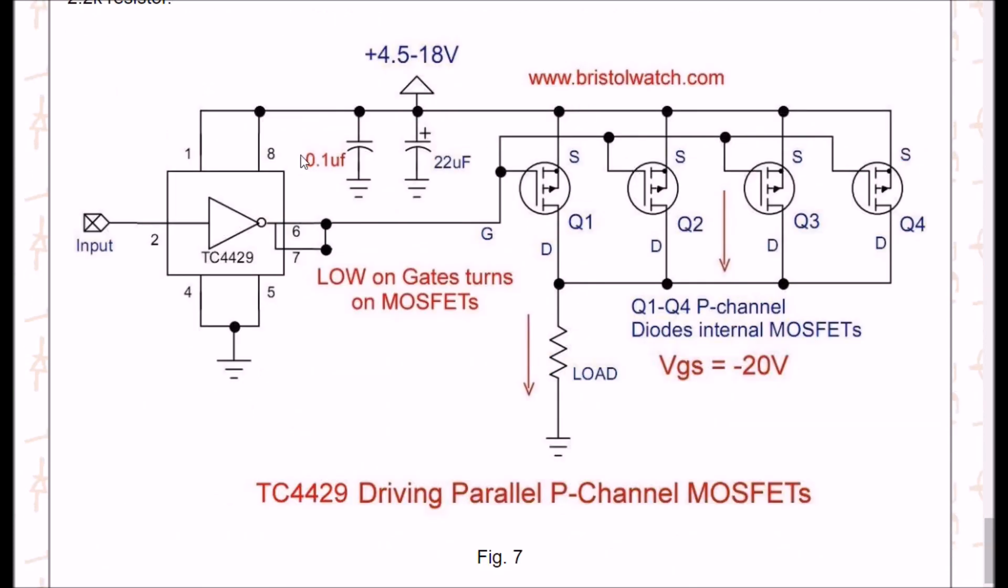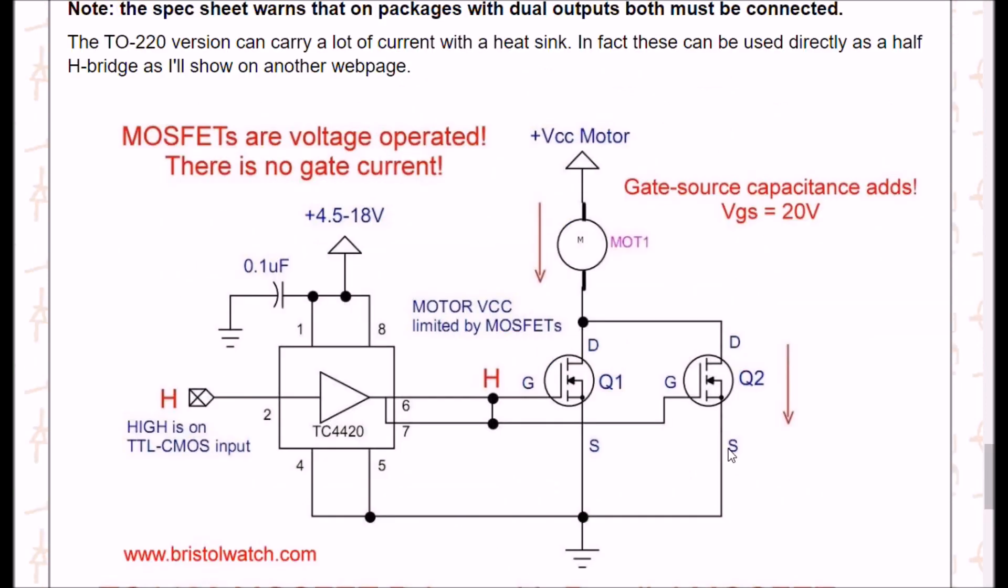Or we could look at it the other way. In this configuration, I'm using P-channel MOSFETs with a TC4429. A high in gives me a low out, turns on these MOSFETs. You can use a TC4420. Just keep in mind, a high will turn off the transistor. So, this would be a high side switch, and this could be a low side switch.